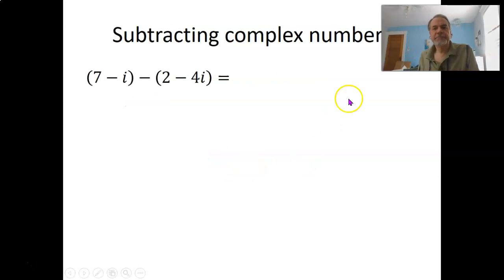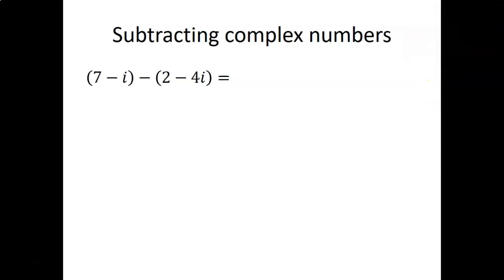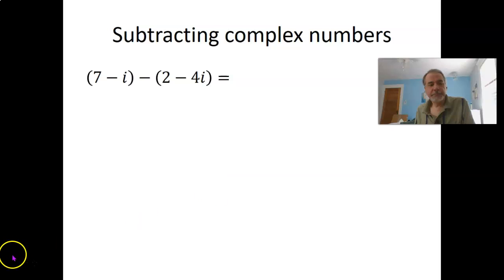What about subtracting? Same idea. Treat the i sort of as a variable. But remember, we're subtracting the whole thing here, subtracting that second complex number. So we are subtracting 2, and we are subtracting the negative 4i. So 7 minus i minus 2 minus negative 4i. 7 minus 2 is 5. The minus i minus the minus 4i is plus 3i, and so that's the result, 5 plus 3i.